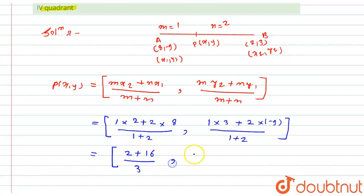Similarly, this will be 3 plus -18, divided by 3. So here I will get the coordinates of P as 18/3, -15/3.